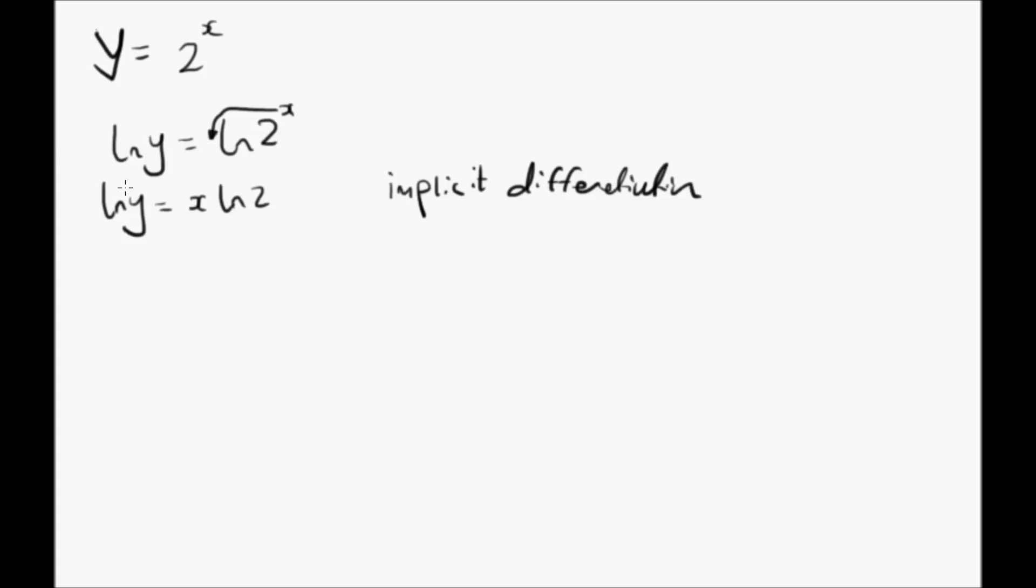So differentiating natural log of y, it's 1 over y dy/dx. And then we're going to use the chain rule on here. So it's the first term multiplied by the derivative of the second term.